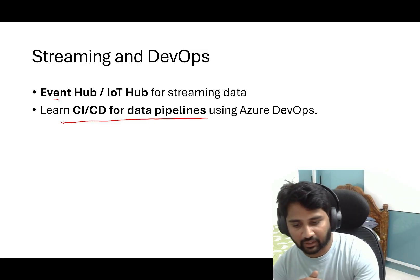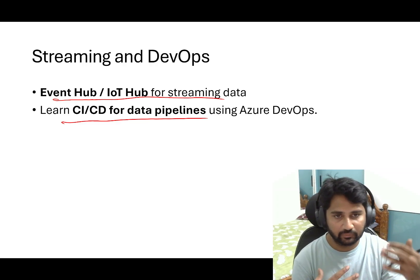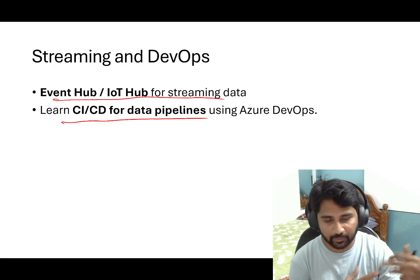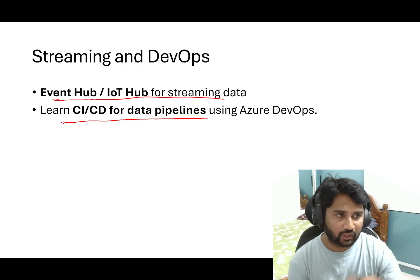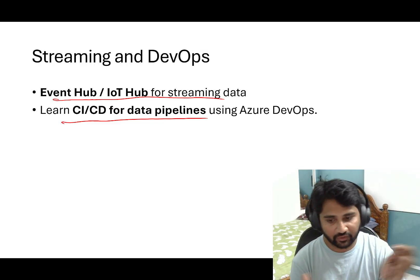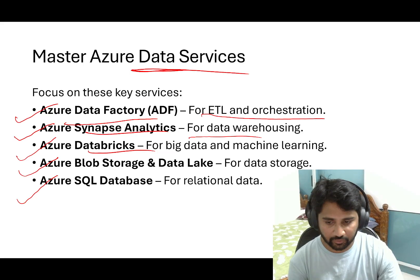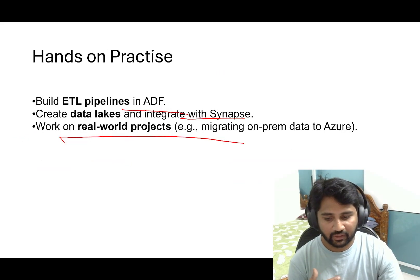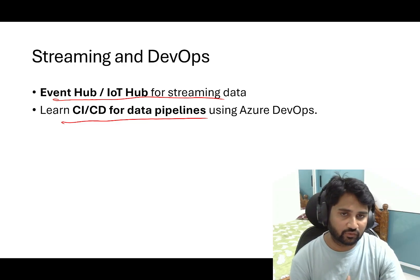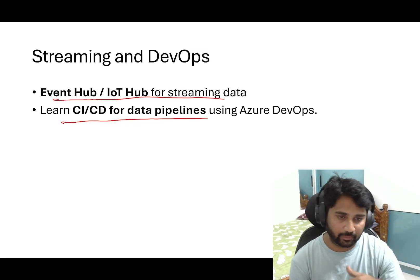There is also something called Event Hub for streaming data. In data engineering solutions, sometimes the data coming from the source is streaming data — meaning it continuously arrives and you need to process it in real time. Event Hub in Azure handles this kind of job. Plan one or two sessions to learn Event Hub at a high level, which will be very helpful to you.